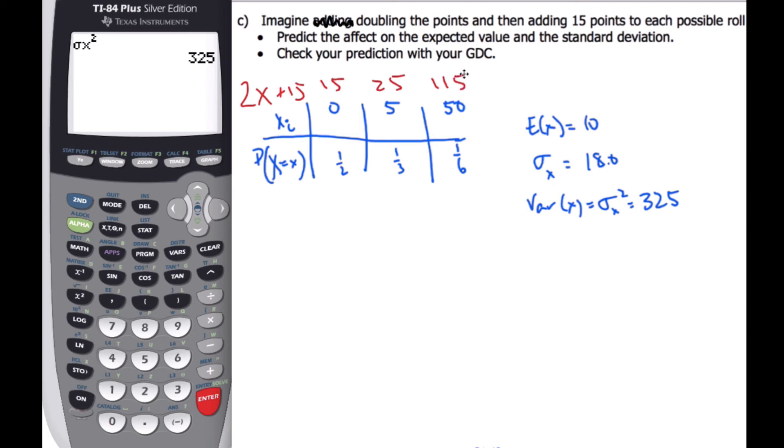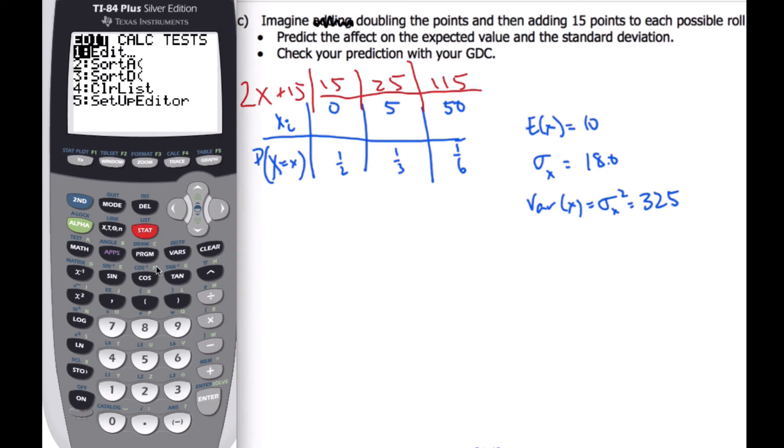So here are my new outputs, my new possible values. They have the corresponding probabilities. And so if I predict what's going to happen, this multiplies all my values, and then this shifts it. So if I check these values with my calculator,